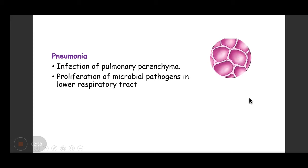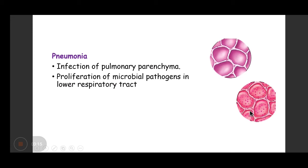Pneumonia is infection of the pulmonary parenchyma. What happens is proliferation of microbial pathogens in the lower respiratory tract — the small bronchioles and alveoli — resulting in inflammation of the pulmonary parenchyma.